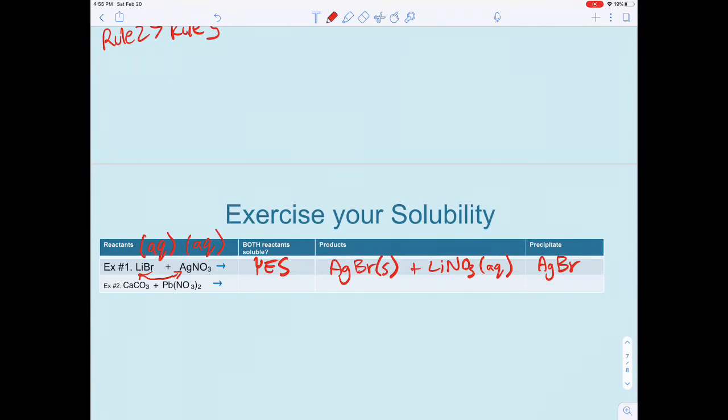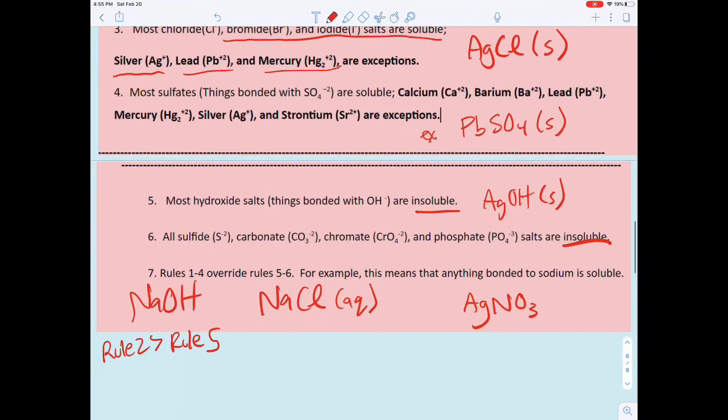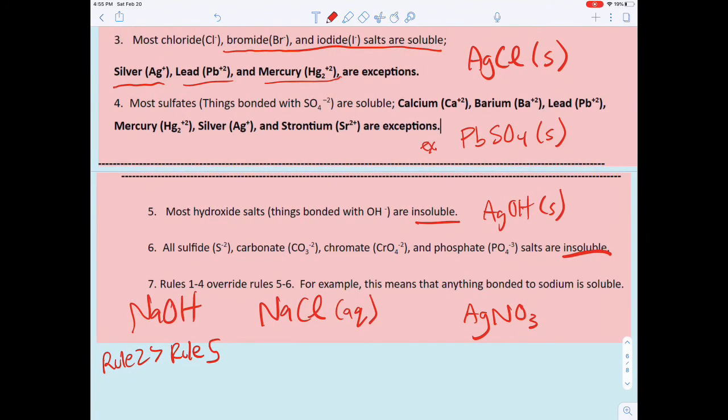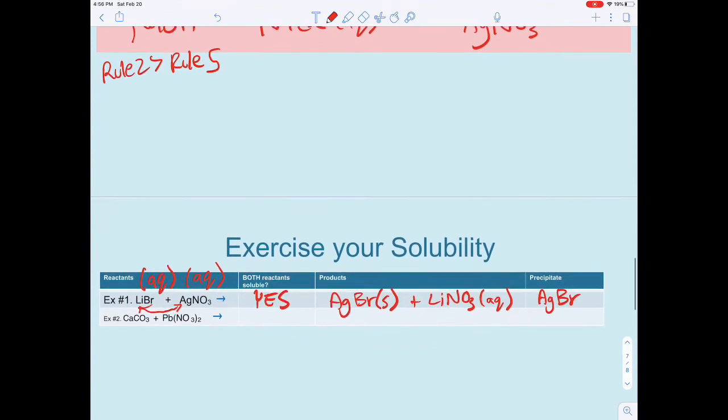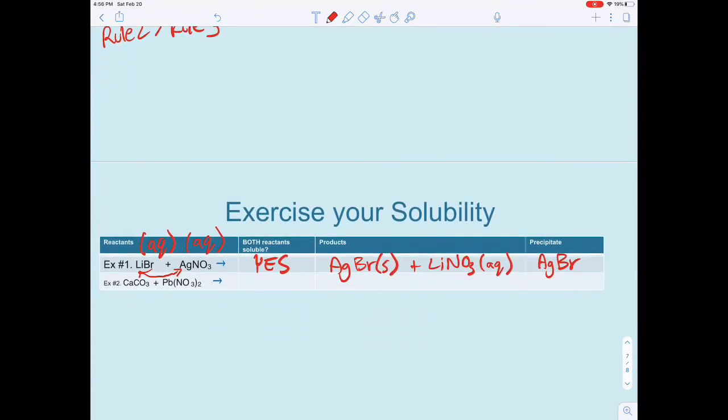In the second example, are both reactants soluble? Calcium carbonate, CO3—carbonates are insoluble, and this isn't bonded to sodium, so this is insoluble. Nitrates are soluble—that's rule one. Are both reactants soluble? No.